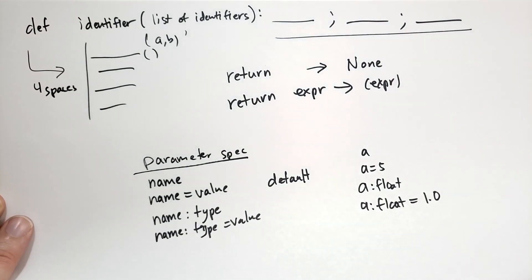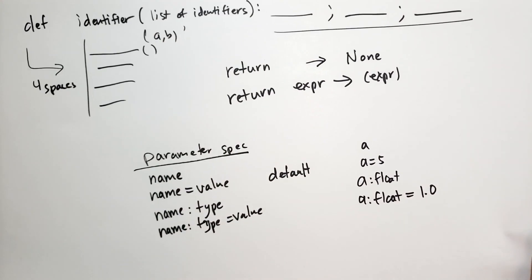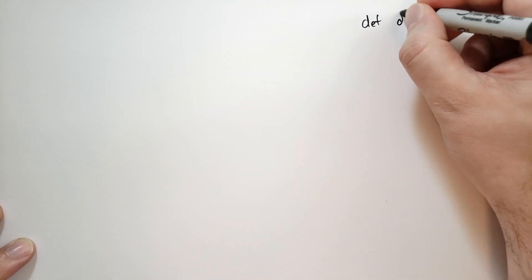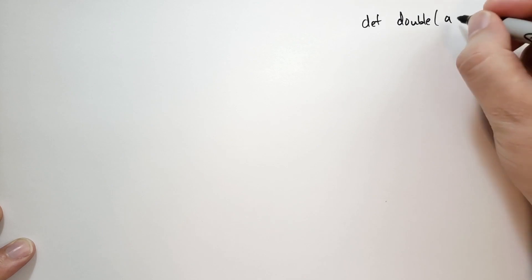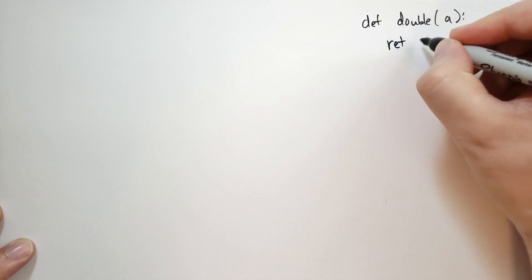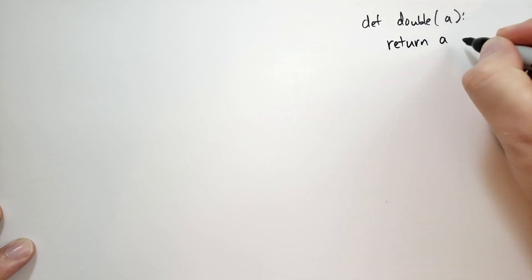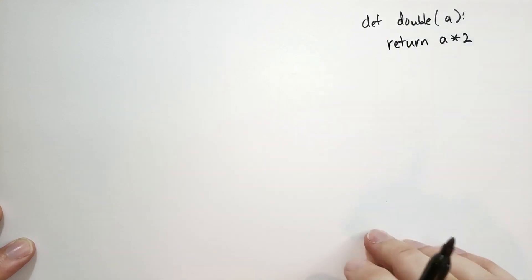Let's talk about what is really going on inside of Python when you call a function. So as an example, I'm going to have a simple function over here. This is going to be the function def double, and it's going to take a parameter a, and we're just going to, you have to specify it, there's no default value, and it's going to return a times 2.